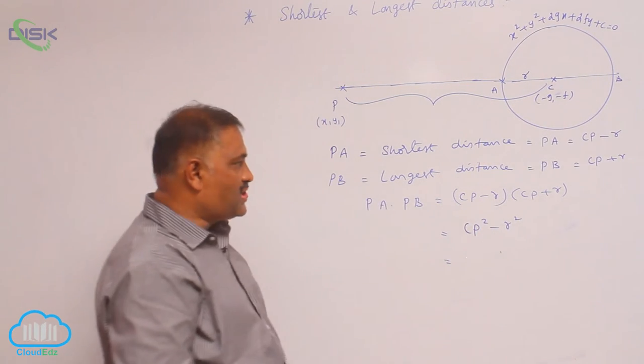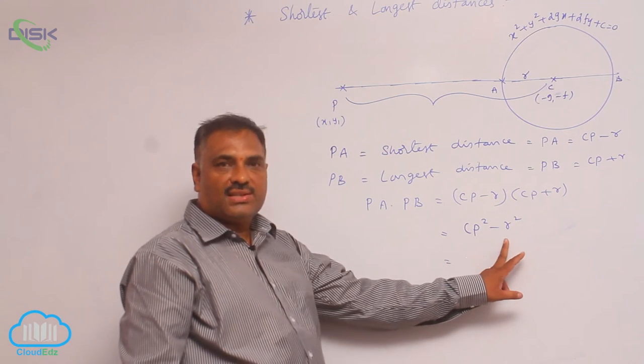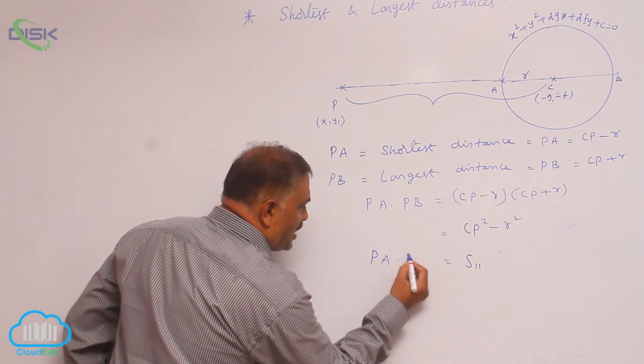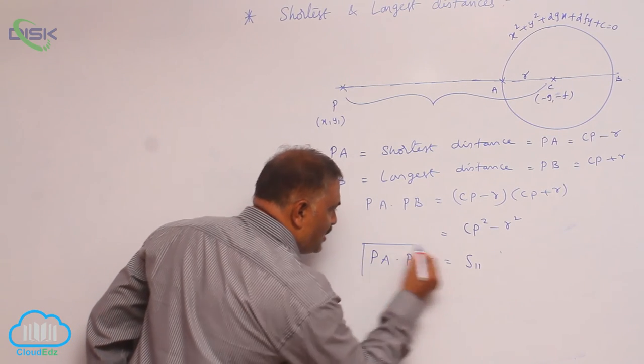According to our earlier notation, CP square minus r square is the power of the point S11. So PA dot PB equals S11.